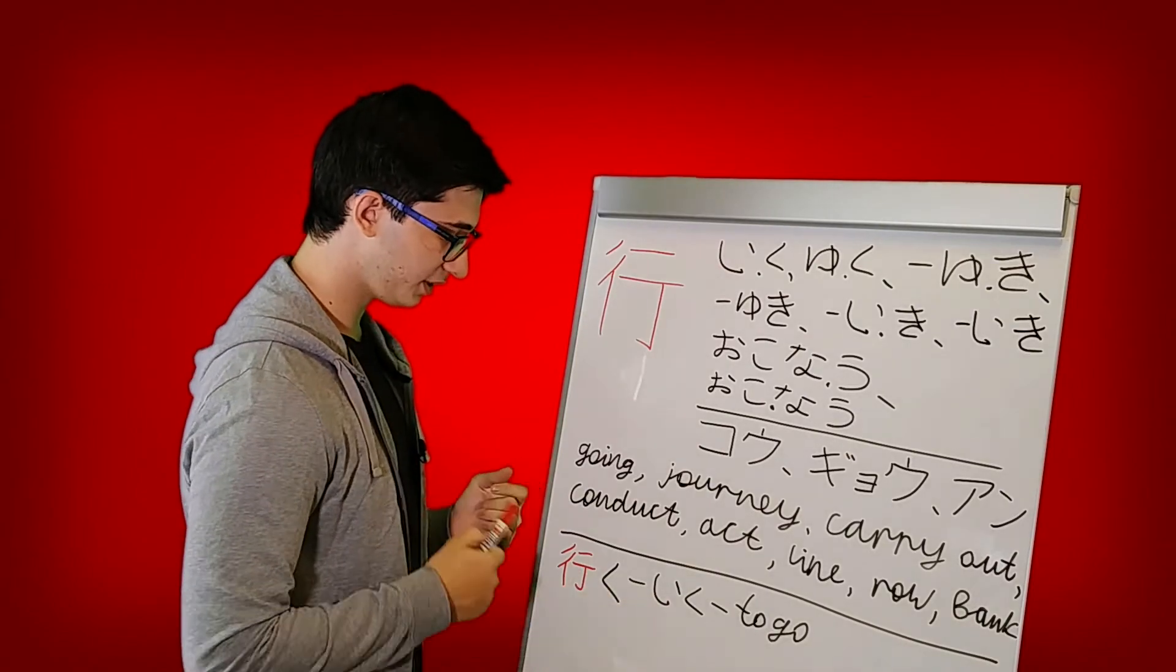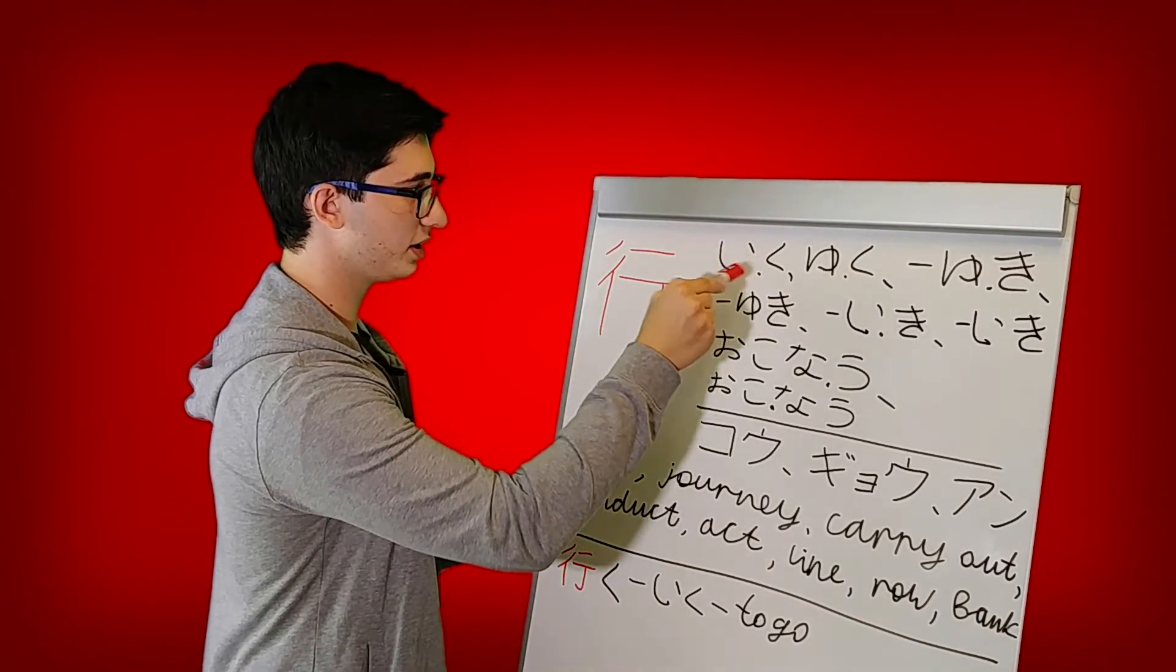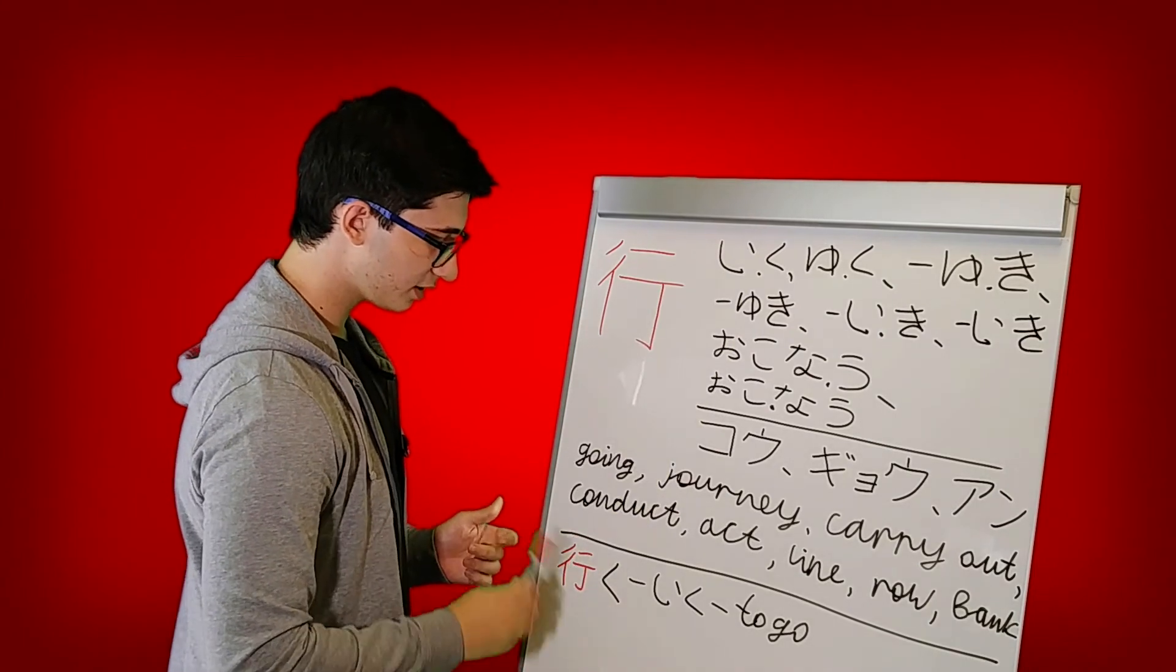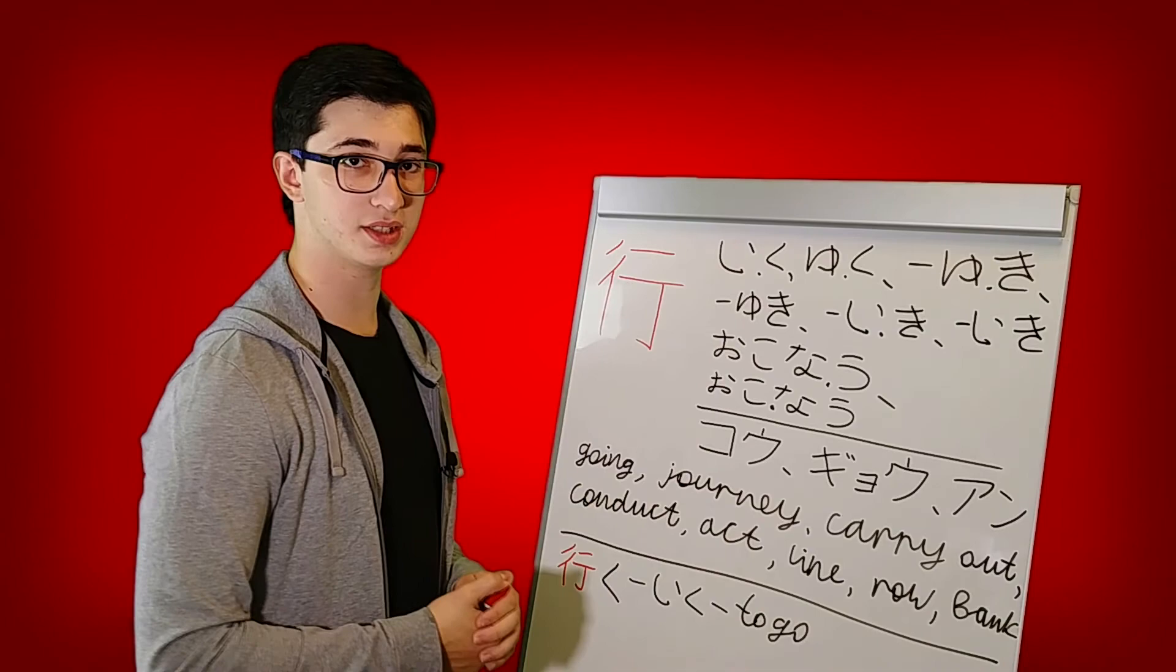So now let's look at example words. So in this case, we only have the word iku, which means to go. And this uses this reading right here. So once again, it is iku, which means to go.